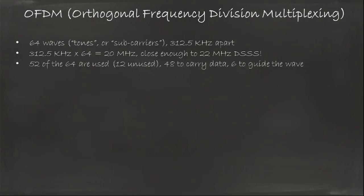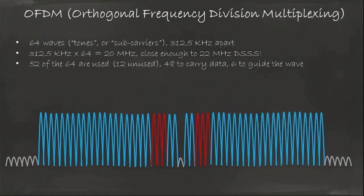Out of the 64 actually, not all of them are used. 12 are not used. 48 are used to carry data and 6 are used to guide the wave. So this is how it looks. You have the bottom 6 and the top 5 that are not used. They are stayed flat. You don't send anything there. There is no wave. And that's to make sure that you distinguish one channel from the other. If you have the next transmission just nearby on the next channel, you want to have some neutral ground in between to avoid noise.